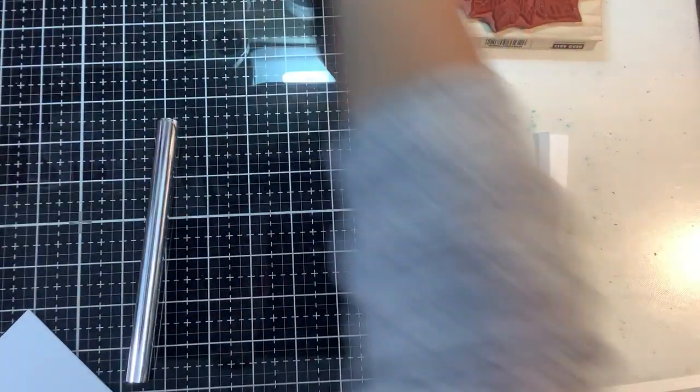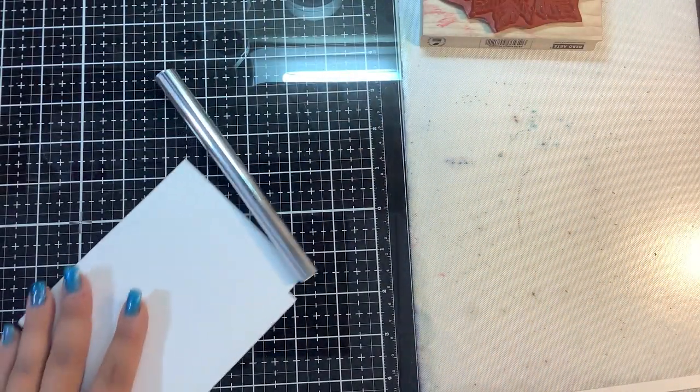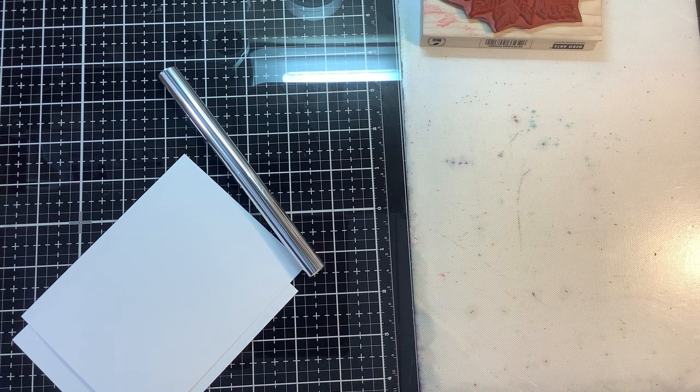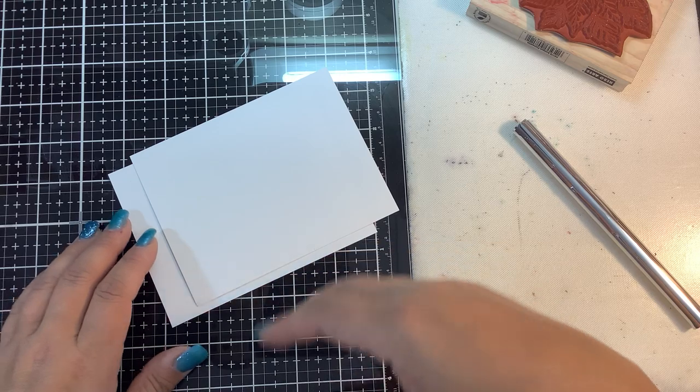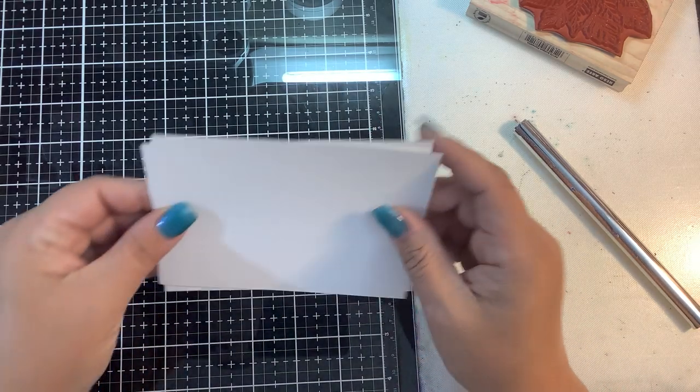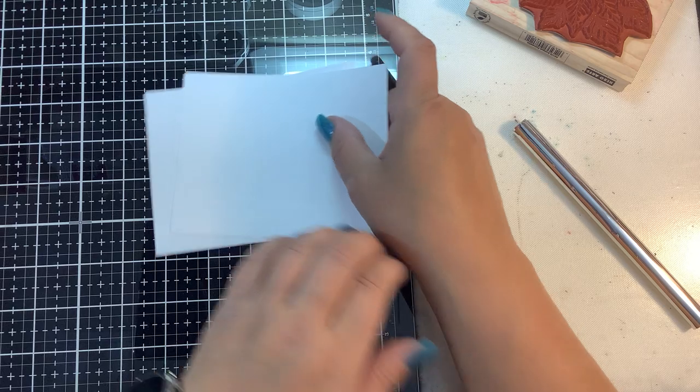what the foil quill does, it's basically a heated tip you can put it in your Silhouette, your Brother Scan and Cut, your Cricut electronic machine, and anything that you can sketch, it can use hot foil to activate it.